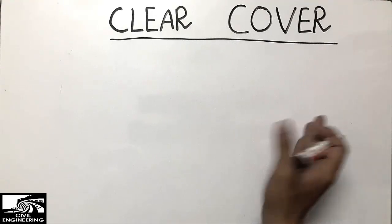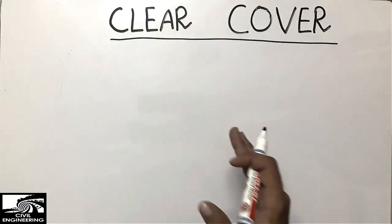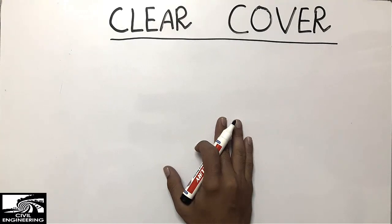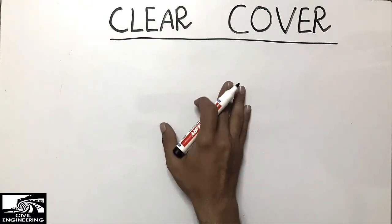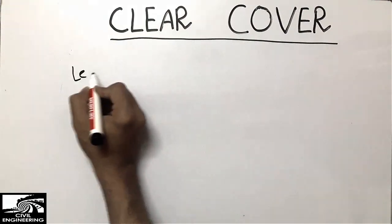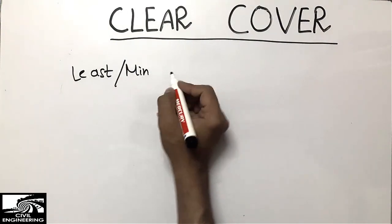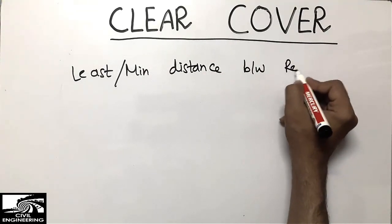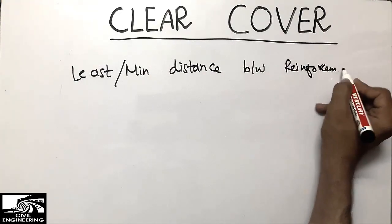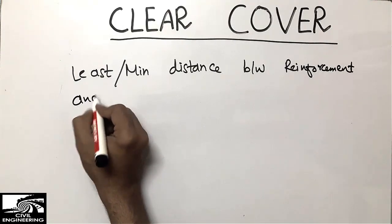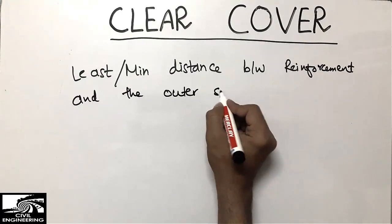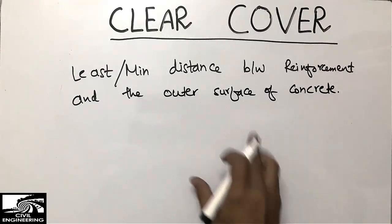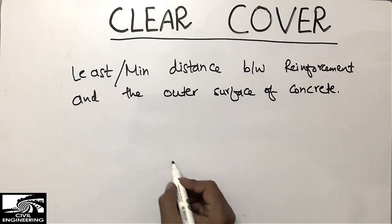I will define clear cover, explain it, and give examples for beams and columns. The standards specify the minimum cover you should provide. The definition is: clear cover is the least or minimum distance between the reinforcement — the steel bar — and the outer surface of concrete.